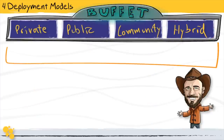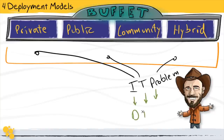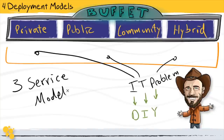These four deployment models fit together like a tasty buffet with all sorts of different options to choose from. If a company has an IT problem to overcome, there are a number of options to pick and choose from to solve those problems — and depending on your skill sets and requirements, you can always choose to do some of the work yourself to add control, save money, or just make it the right fit. In our next lesson, we'll expand our options by looking at the three service models available within each cloud deployment model.